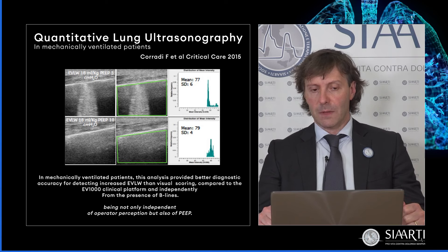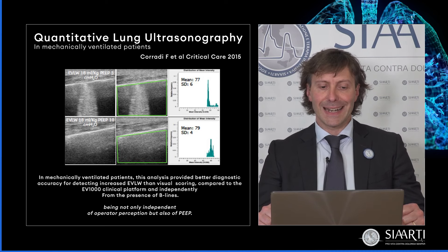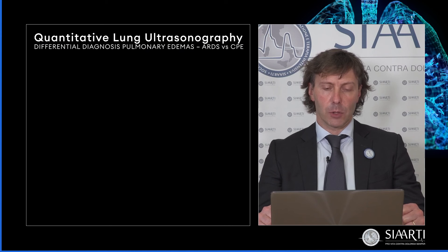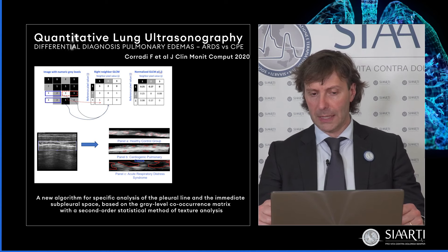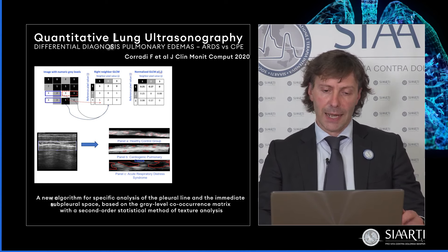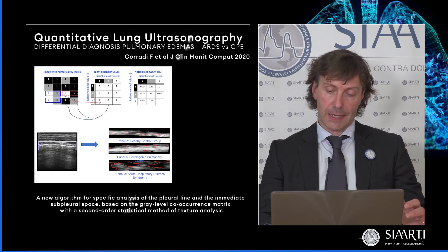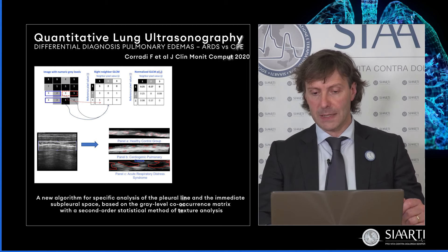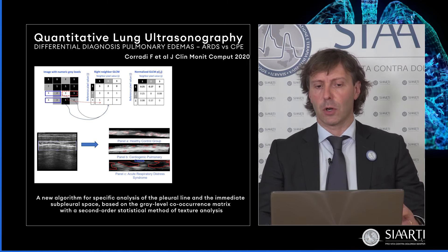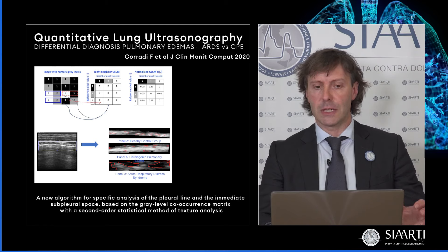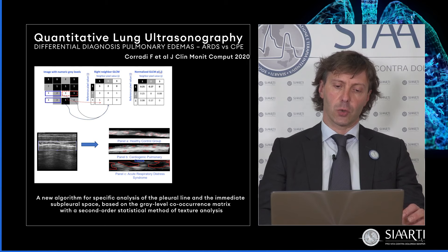Alla fine del 2020 abbiamo deciso di sviluppare degli algoritmi che partissero dall'analisi della linea pleurica, che peraltro è l'unica struttura reale visualizzata direttamente dalle ecografie, dalla quale dipartono la maggior parte degli artefatti. Mediante un'analisi con matrici di co-occorrenza e analisi statistiche di secondo ordine, siamo riusciti a differenziare tra di loro differenti tipi di edema polmonare: il capitolo degli edemi idrostatici da quelli lesionali, ovvero di differenziare, solo a livello di imaging, un edema polmonare a prevalente componente cardiogena da un ARDS.